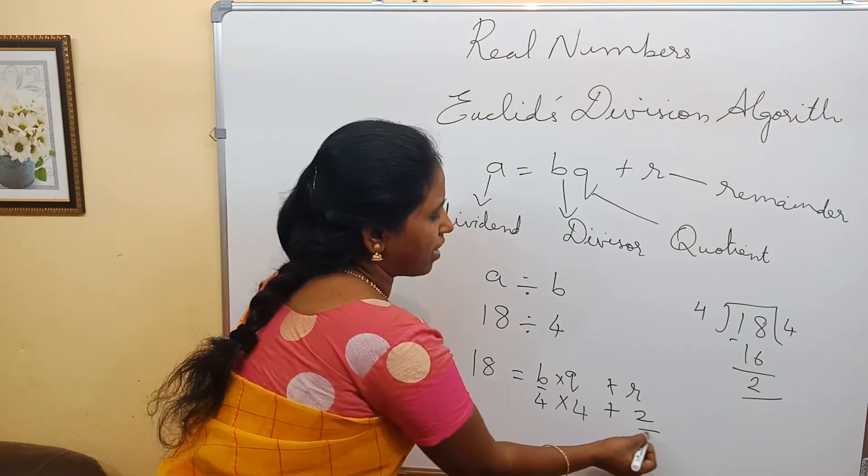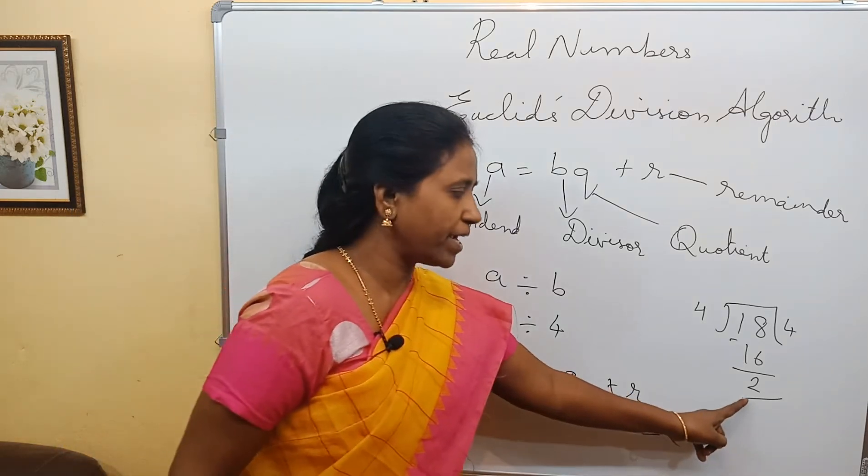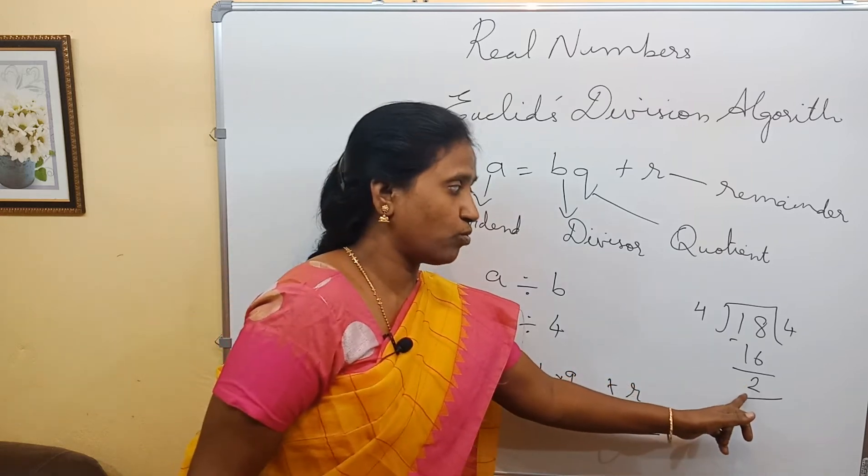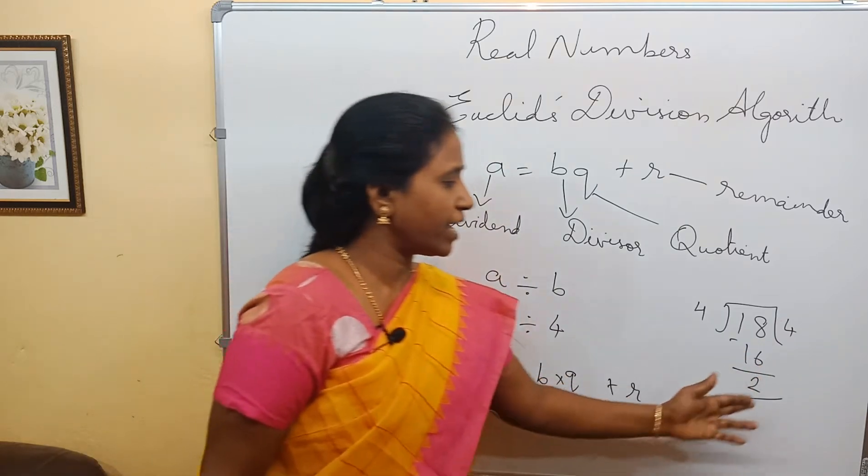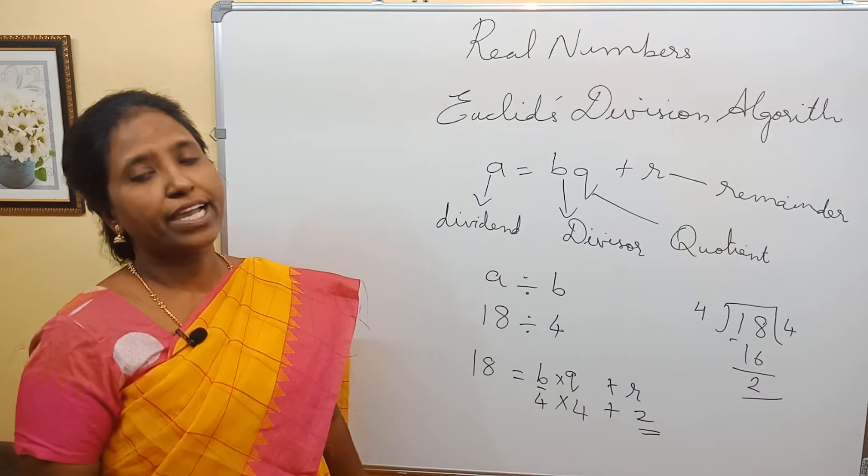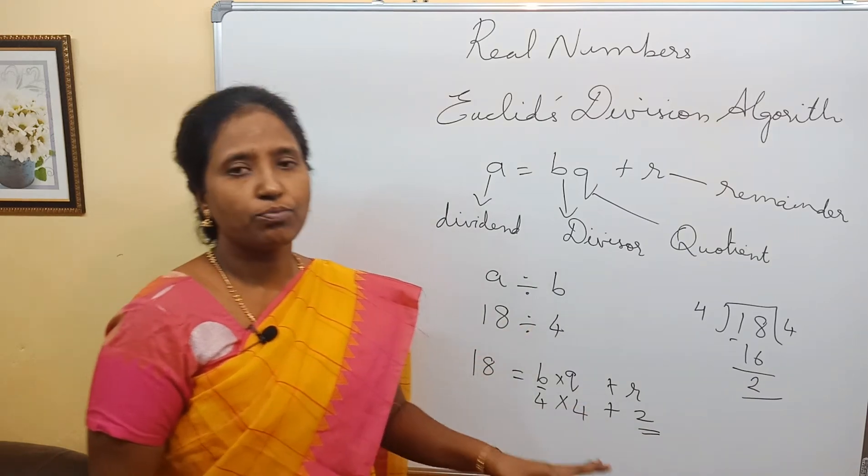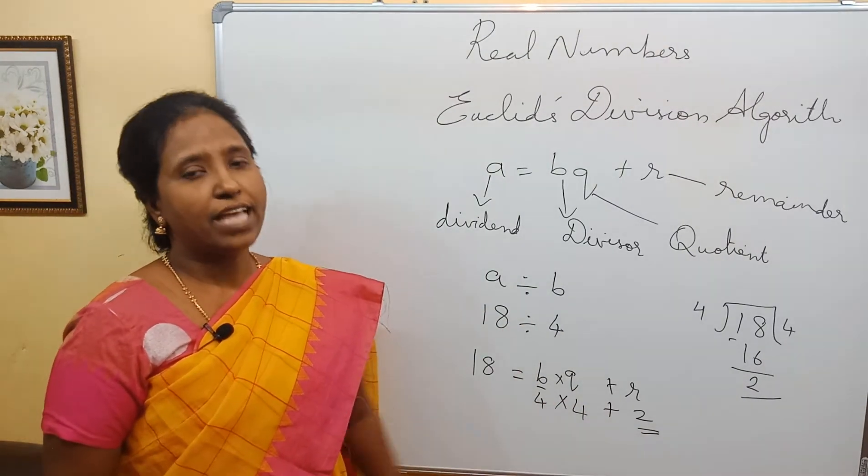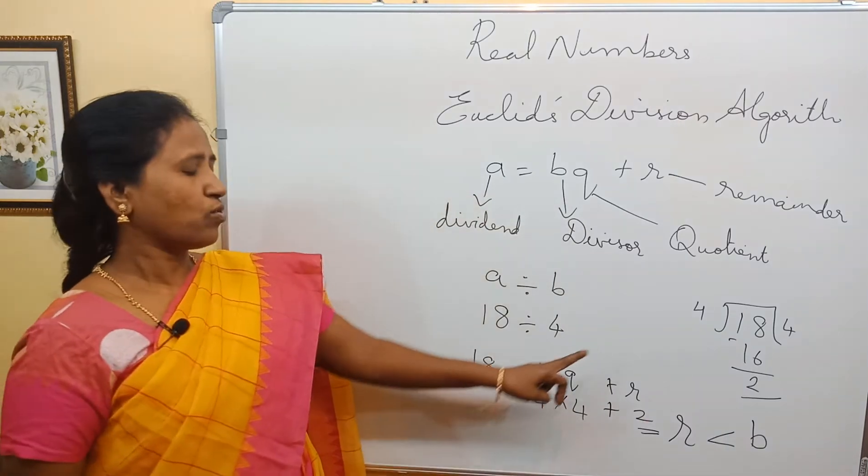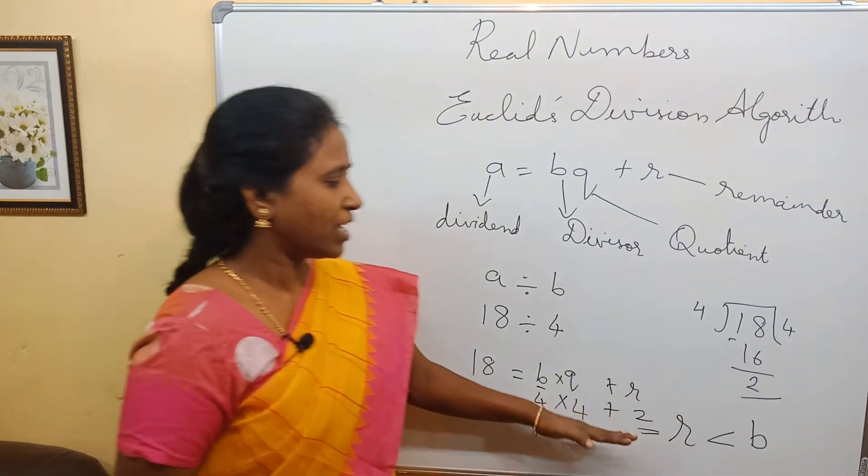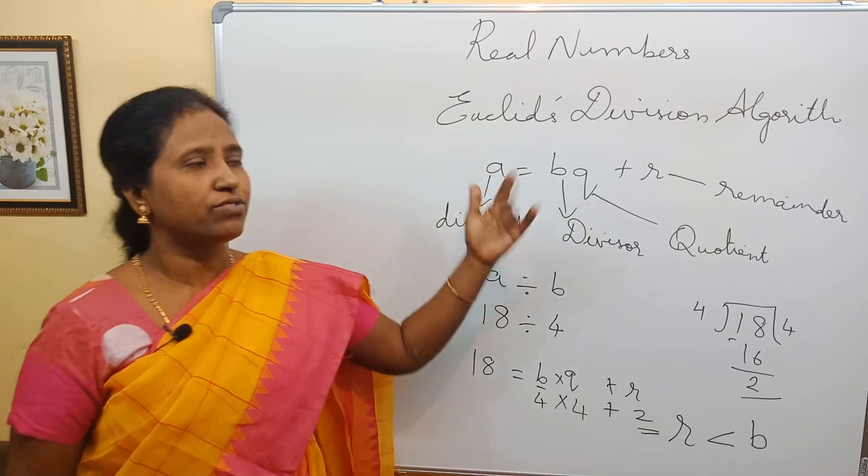Here we see that R, the remainder, is always less than B. This remainder should always be less than B. Because if it is more than or equivalent to B, naturally you will proceed with the calculation. When the remainder ultimately comes, the remainder should be greater than or equal to 0 and less than B. So R is always less than B. Our R is 2, and 2 is less than 4. This equation should satisfy for every positive integer. That is what Euclid's division algorithm says.